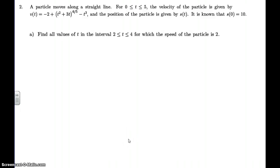Okay, this is the AP Calculus AB exam for the year 2013, and this is the free response question number 2. We have a particle moves along a straight line for a given interval. The velocity is given by the function you see on the screen. The position of the particle is given by the function S of t, and it's known that S of 0 is equal to 10.